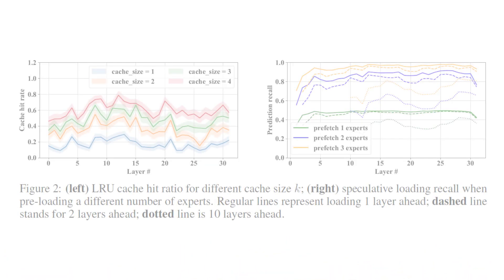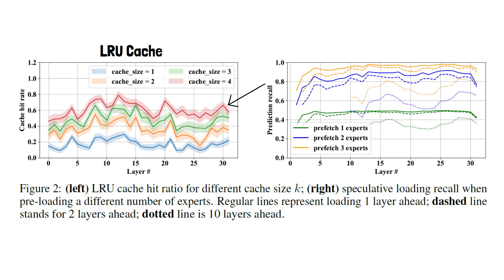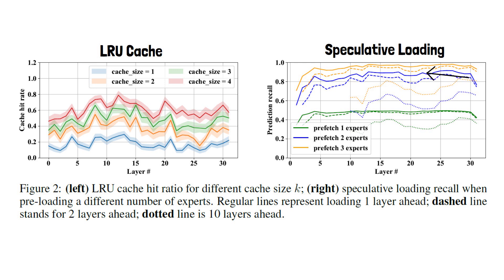In the following figure from the paper, evaluated using Mixtral 8x7B on the Open Assistant dataset, we can see the LRU cache hit rate on the left. With a cache size of 2, we have the correct experts in the cache about 40% of the time; increasing to size 4 jumps that to approximately 60% or more. On the right chart, using speculative loading with prefetching one layer ahead brings the correct expert loaded rate to about 80%, and fetching 3 experts improves it to over 90%. Looking more than one layer ahead shows diminishing prediction accuracy.